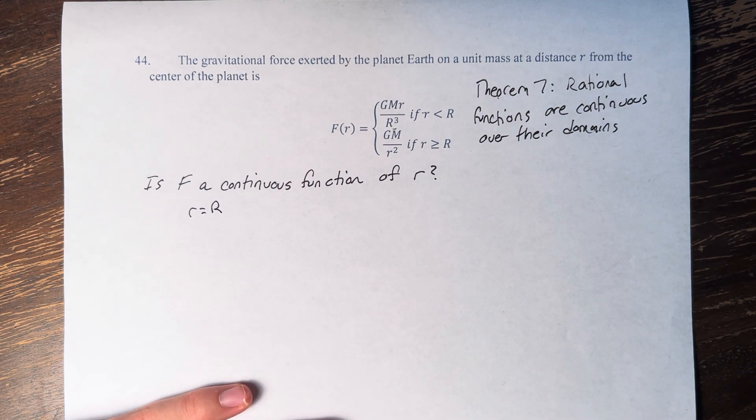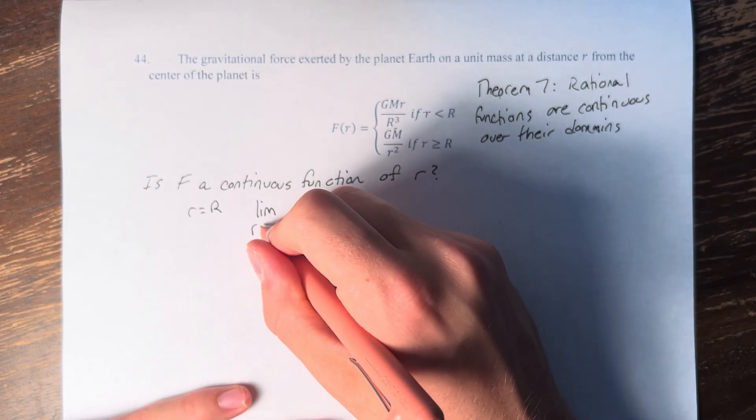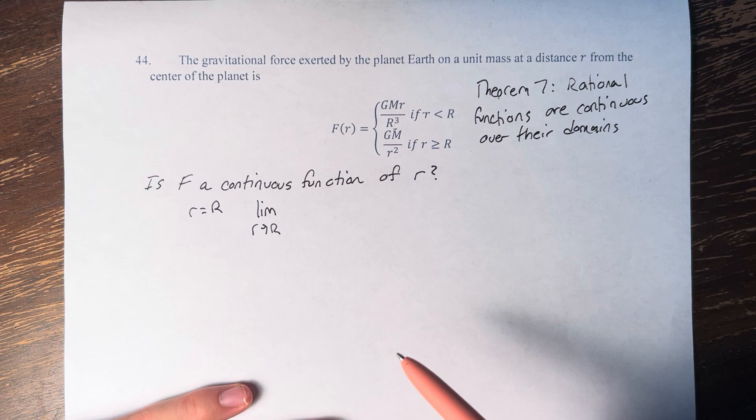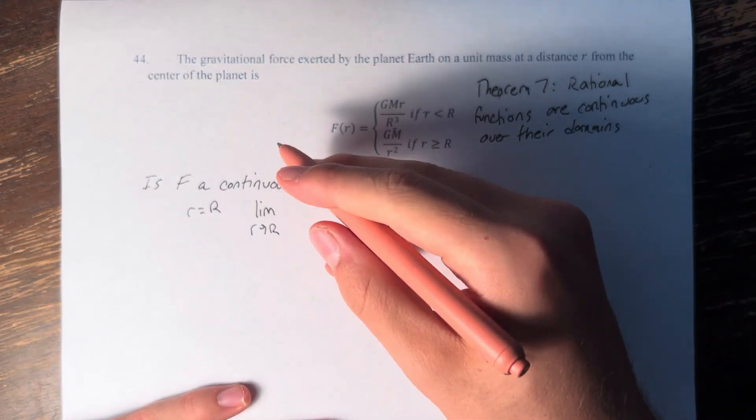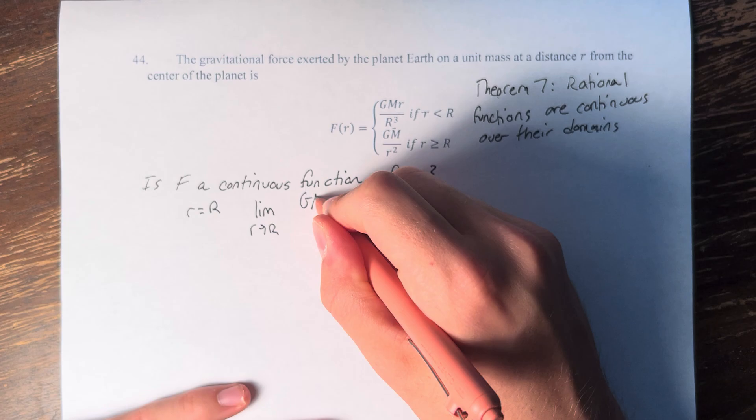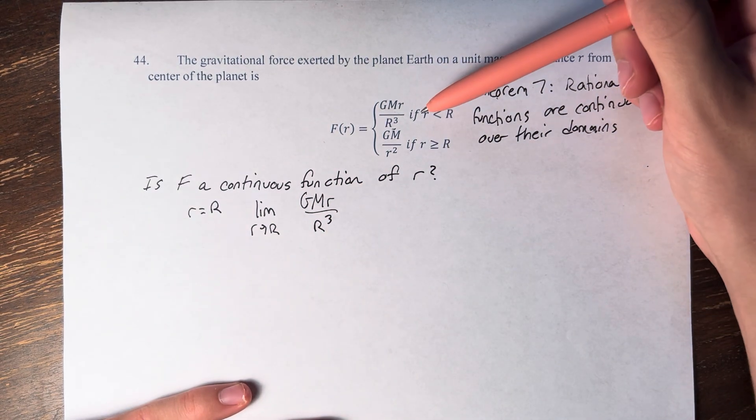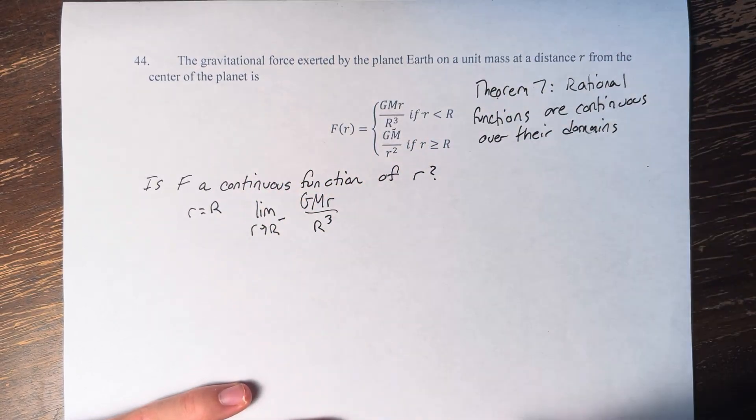And we say, okay, we want the limit as r approaches R of the function GMr over r cubed. So this is for values of little r that are less than big R, so this is going to be approaching big R from the left.